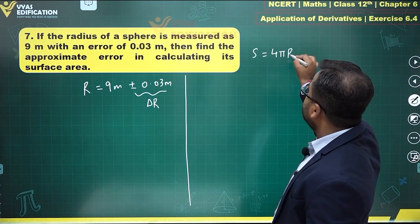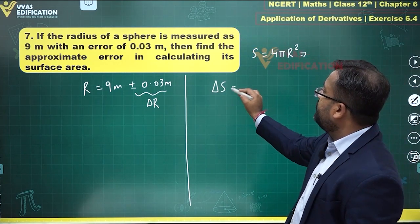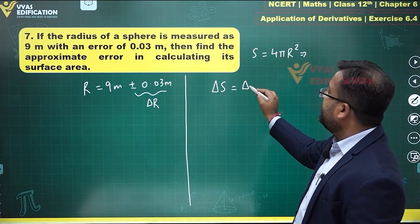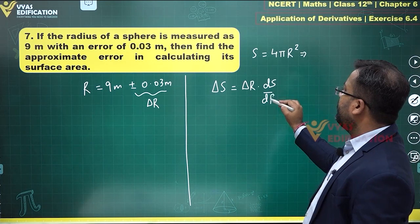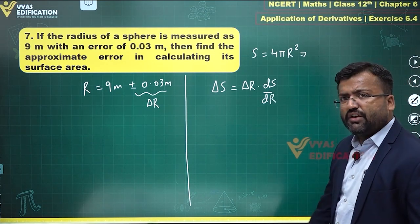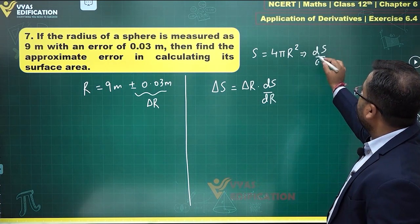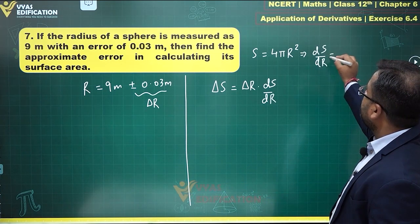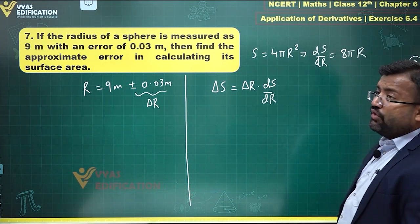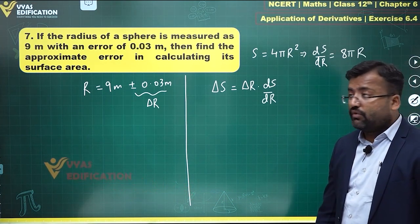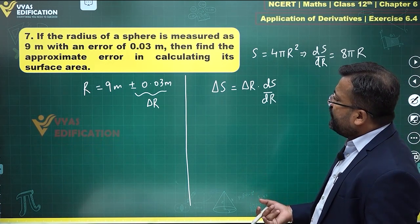The surface area of a sphere is 4πr². We know that delta s will be equal to delta r times ds/dr. And ds/dr can be calculated here: it is equal to 8πr.